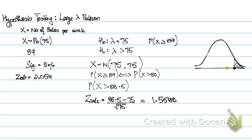distribution to a continuous distribution. After continuity correction, your observed value becomes 88.5. 88.5 minus μ (75) divided by √75 gives you z-calculated. Your z-critical is based on your significance level, and we know that our z-calculated lies in the acceptance region.